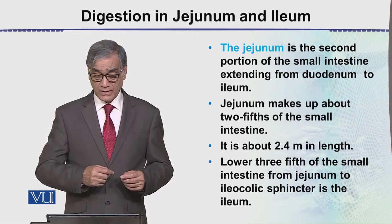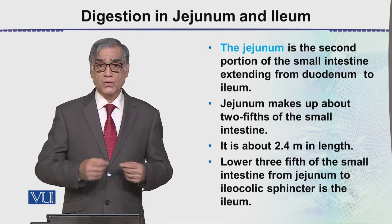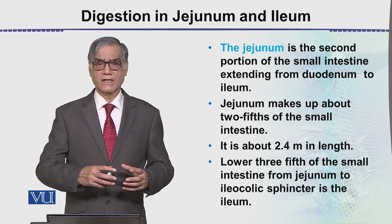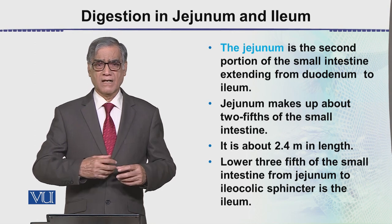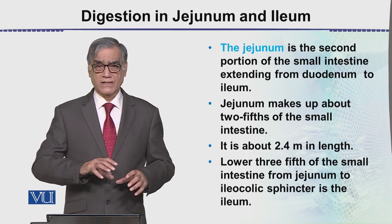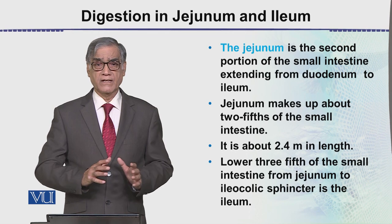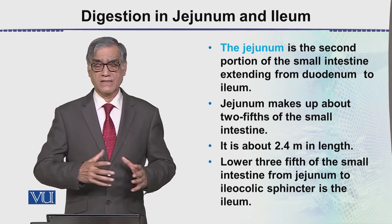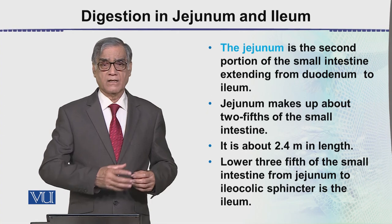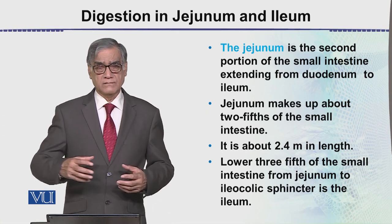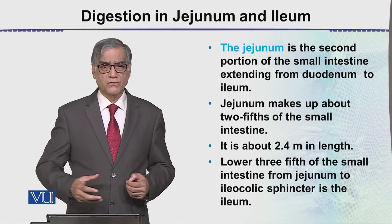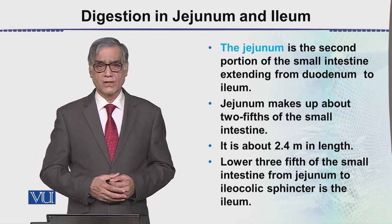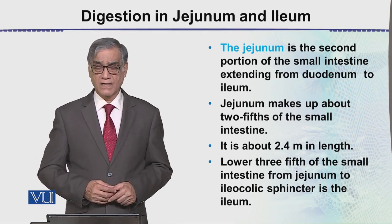The ileum opens into the large intestine through the ileocolic sphincter. This sphincter is a gate of muscles — when they contract, the gate is closed; when they relax, it opens, and partly digested food escapes through the small intestine into the large intestine.